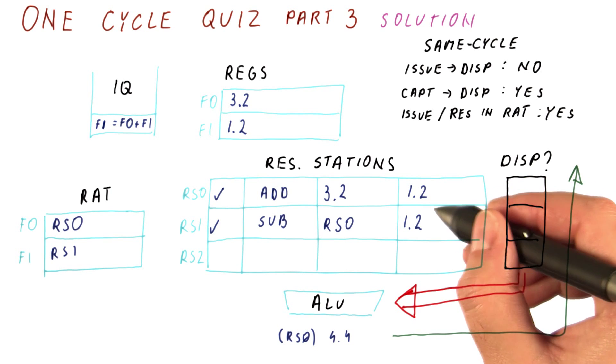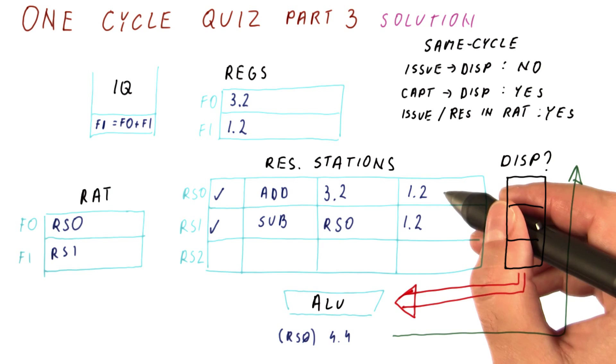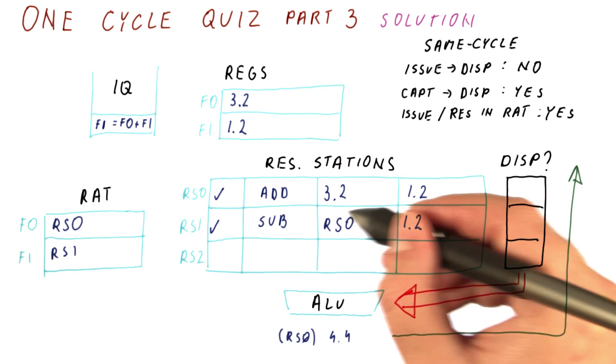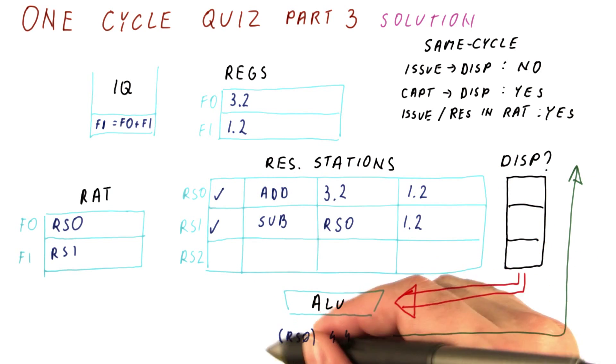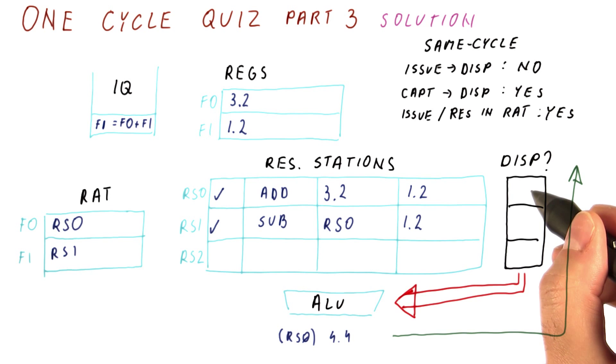This instruction we already saw in part two is going to free its reservation station and it's already executing, so it will definitely not dispatch again.